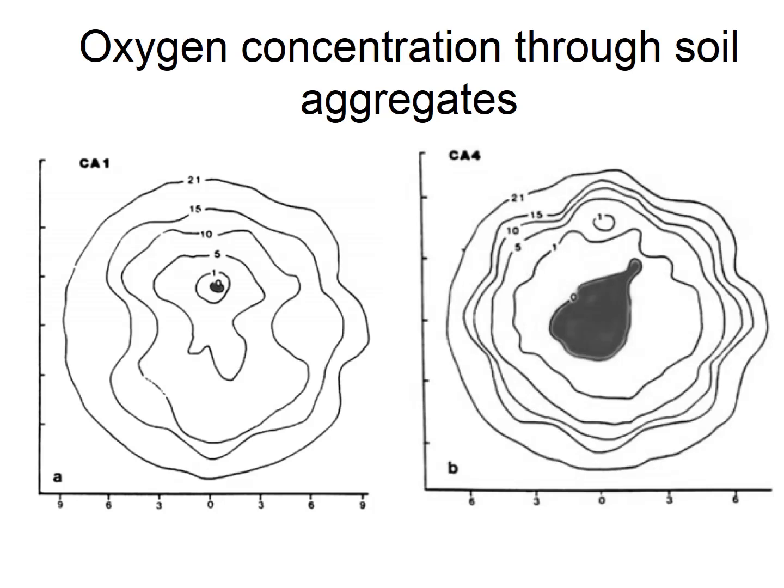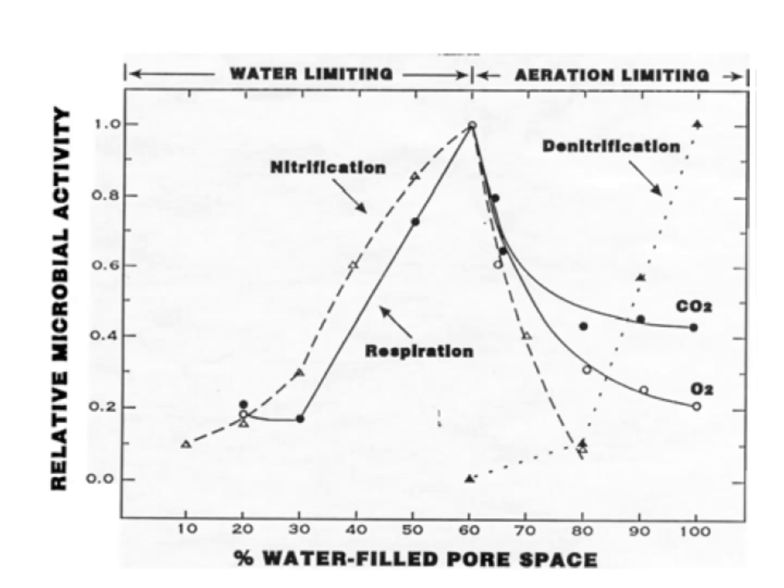This is a contour map for the aggregate. In the first scenario, oxygen concentration is around 21% on the outside, decreasing to 15, 10, 5, and about 1 to 0 in the middle. Within the aggregate itself, there are varying microhabitats — on the surface we get aerobes, and in the middle we get anaerobic activity, even on the surface of the soil. If it is well aggregated, we can see anaerobic activity of microorganisms in the center of the aggregate.